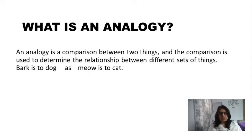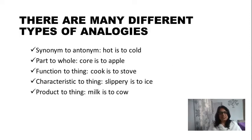So there are many different kinds of analogies. Let's discuss a few types of analogies. The first one is synonym or antonym, so you can have analogies where they can be similar or opposite to each other, as in hot is to cold.